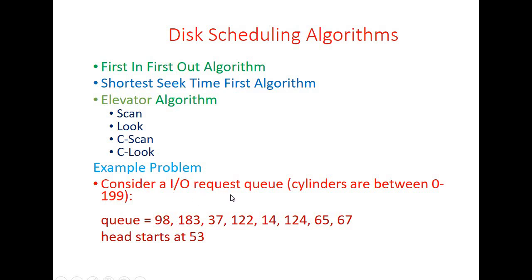Consider an example with an IO request queue consisting of requests to various cylinders. The cylinders range from 0 to 199, and the requests for cylinders are: 98, 183, 37, 122, 14, 124, 65, and 67.